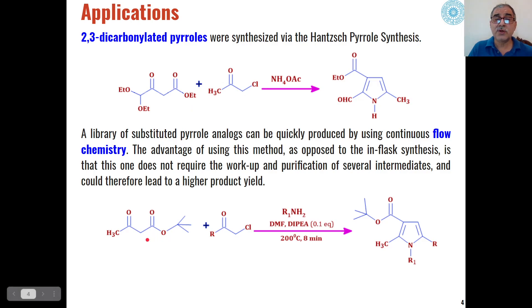Similarly, through flow chemistry, we can synthesize pyrroles by Hantzsch synthesis. When we use tert-butyl esters in addition to the alpha-chloro ketones in presence of primary amines as the nitrogen source, we will get these types of pyrrole esters as the product.